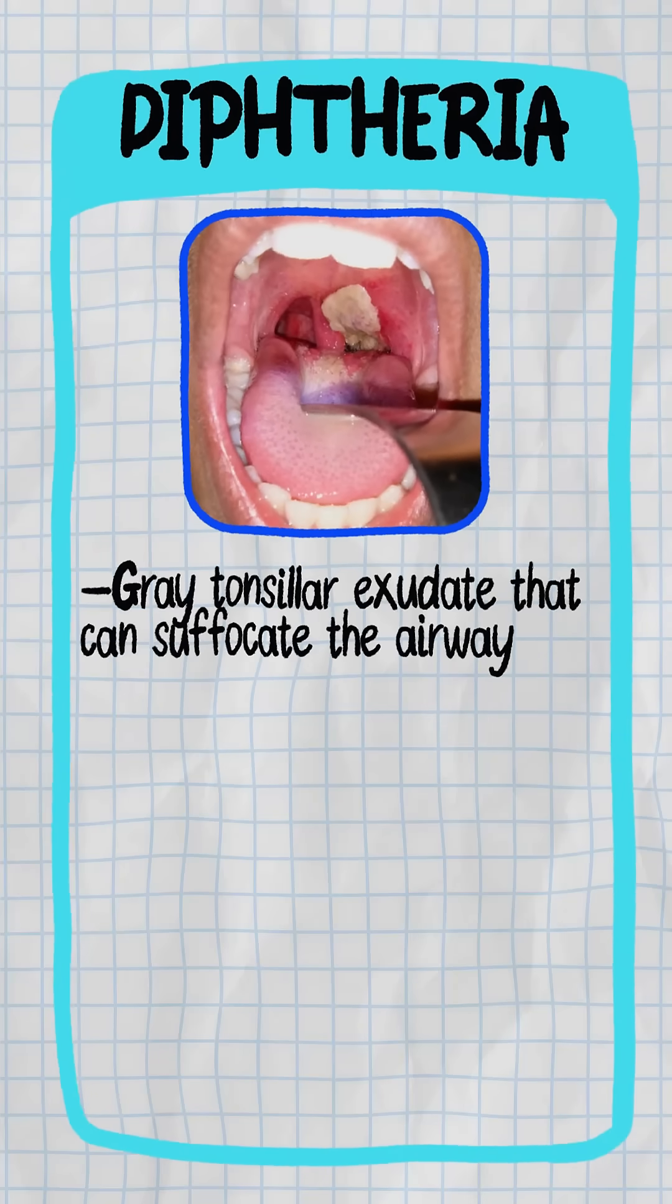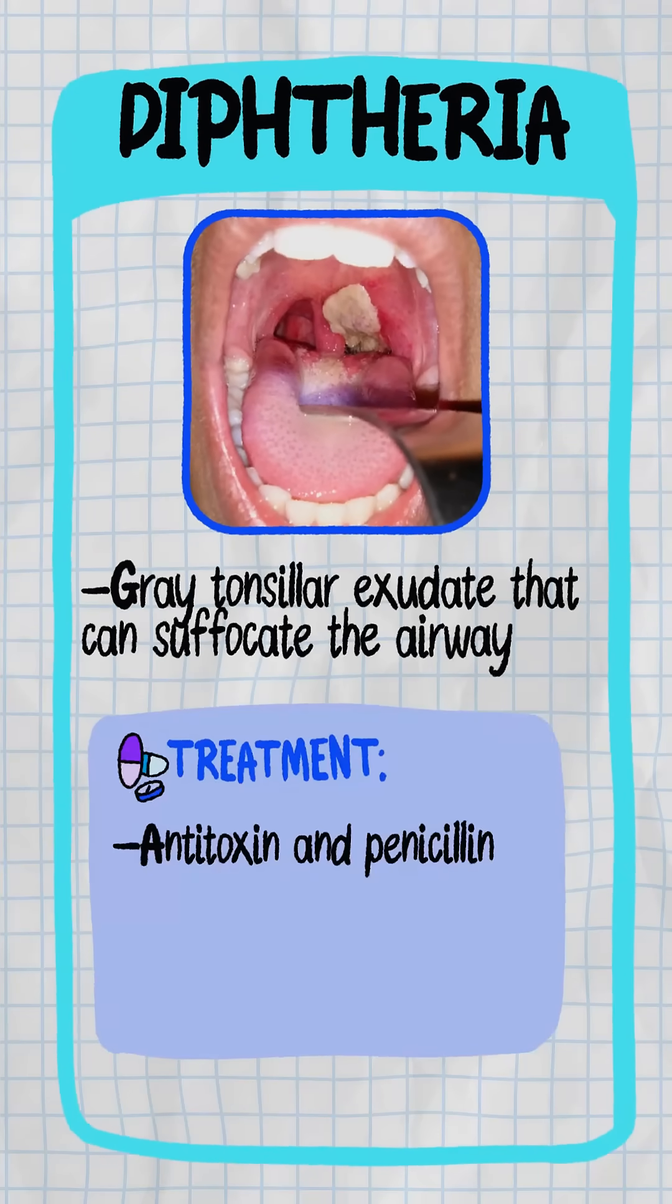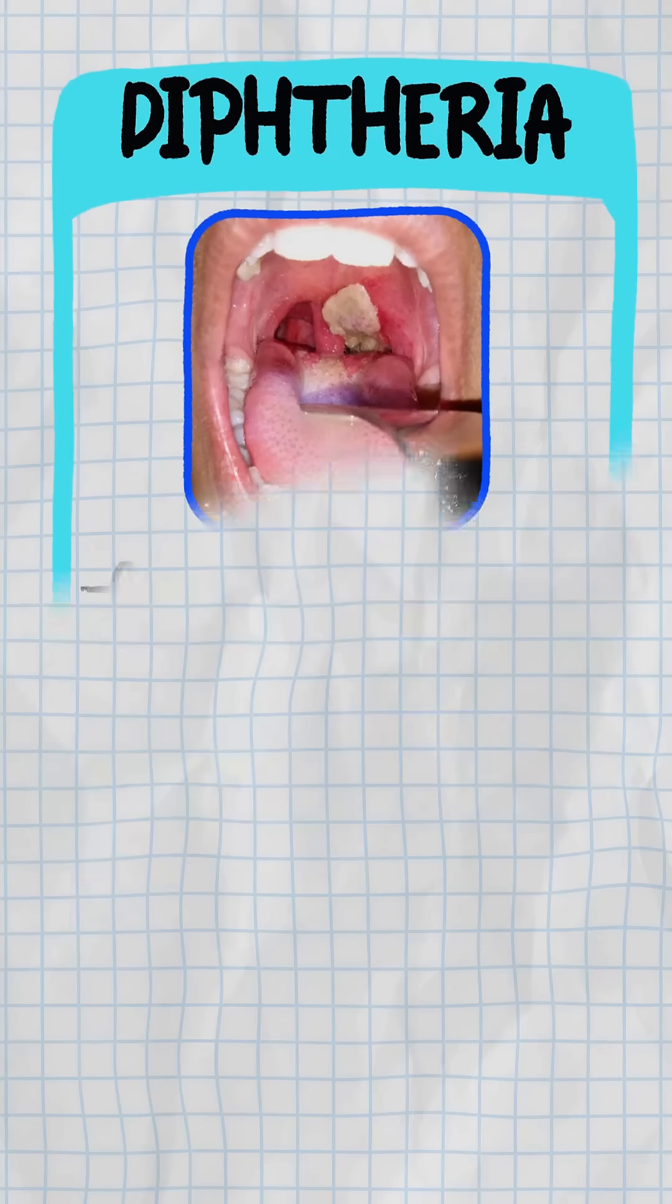Diphtheria gives you gray tonsillar exudate that can suffocate the airway. Start antitoxin and penicillin. Don't forget myocarditis. Monitor the heart closely.